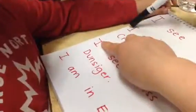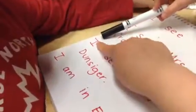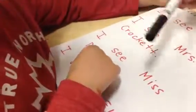So let's point. Can you point to this one and read it? Put your finger where my finger is. I, I, C, Miss, Miss, Dunsinger. Okay.